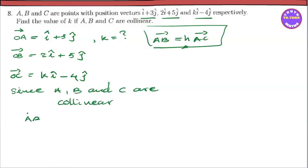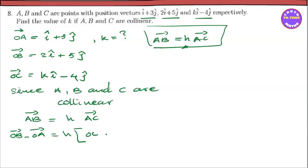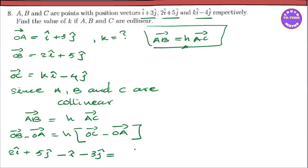AB vector position: OB vector minus OA vector equals H into AC vector, which is OC vector minus OA vector. OB is (2I + 5J), OA is (I + 3J), OC is (KI - 4J). So AB vector equals (2-1)I + (5-3)J equals I + 2J. And AC vector equals (K-1)I + (-4-3)J equals (K-1)I minus 7J.